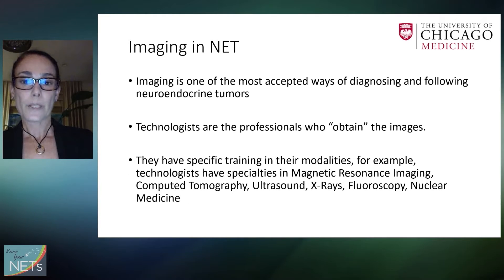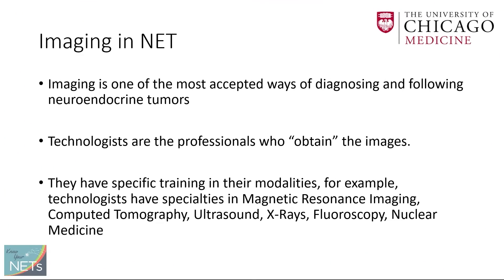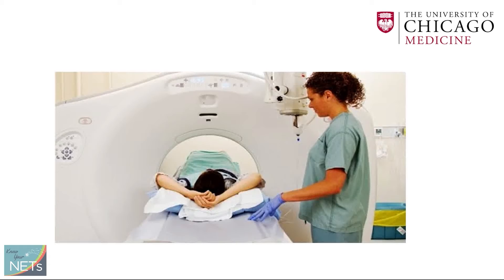Imaging is one of the most accepted ways of diagnosing and following up neuroendocrine tumors. The technologists are the professionals who obtain the images, and they have specific training in their modalities — for example, specialties in magnetic resonance imaging, computer tomography, ultrasound, x-rays, fluoroscopy, and nuclear medicine. They're the ones who help us radiologists get your images so we can interpret them.